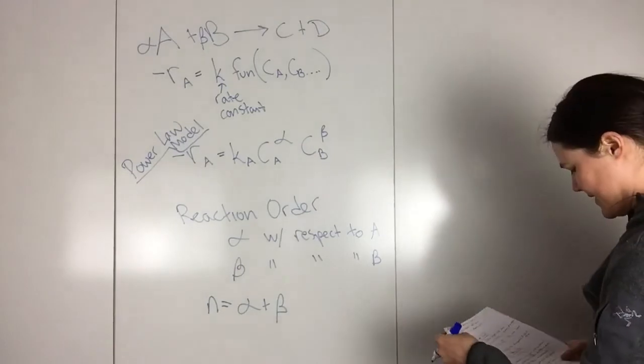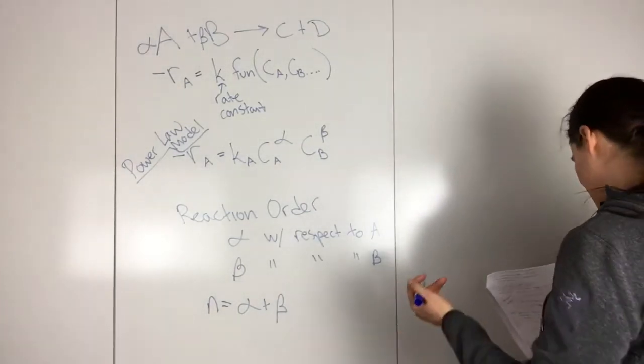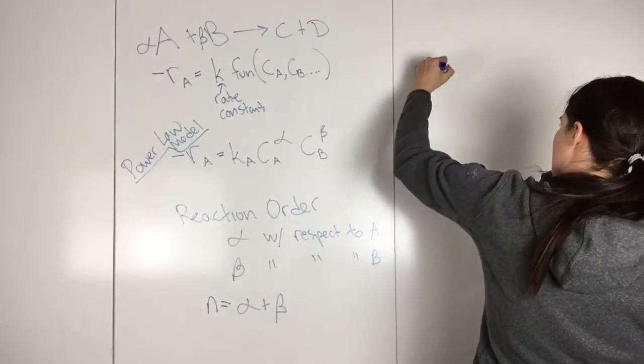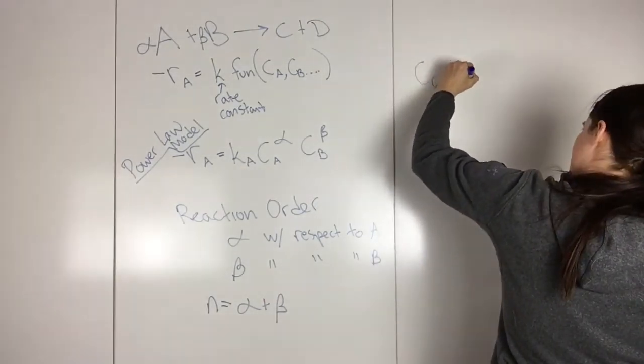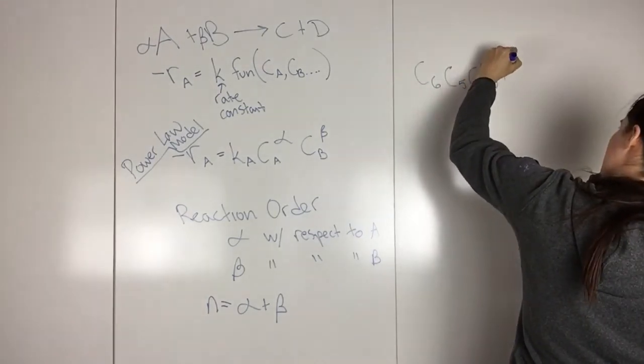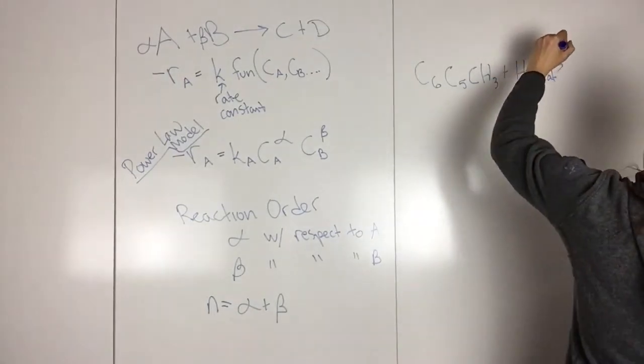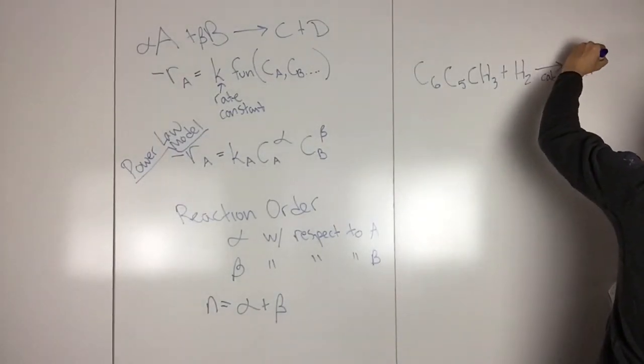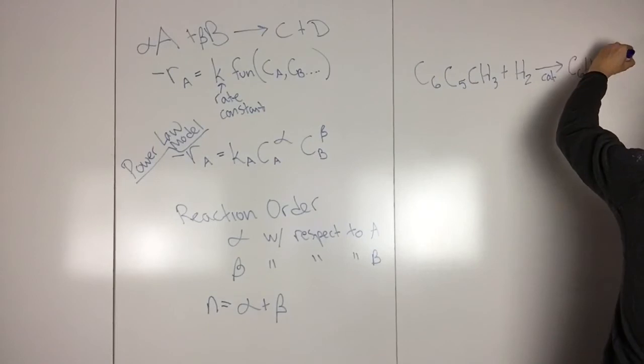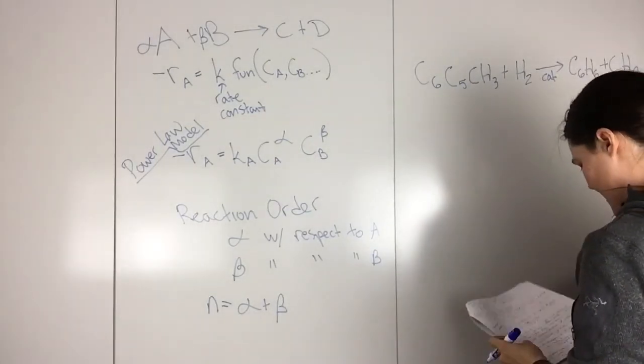So for instance, one example of that would be hydromethylation of toluene. So that would be C6H5CH3 plus H2 with a catalyst to C6H6 plus CH4.